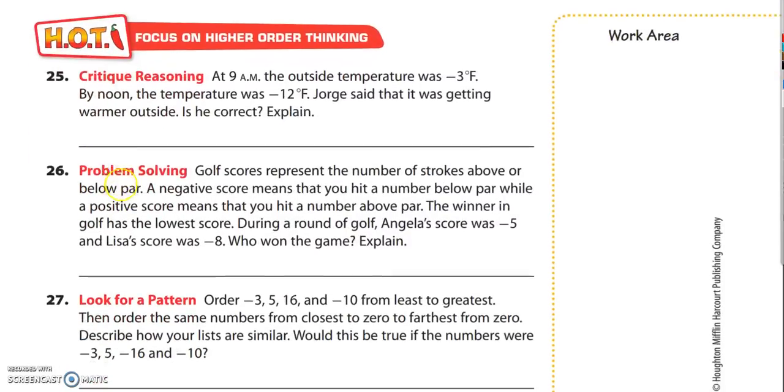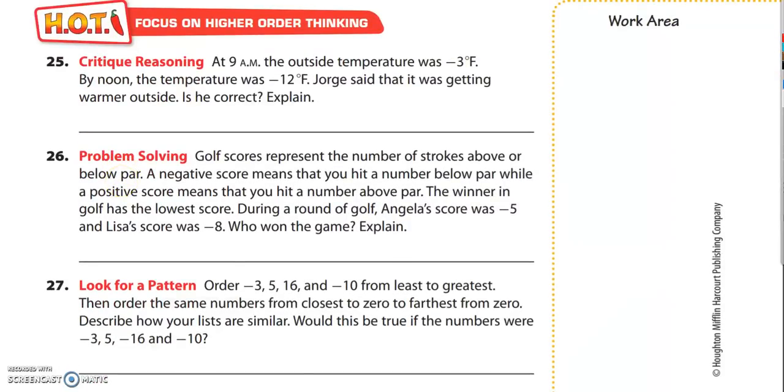Okay, let's go ahead and move on to the HOT questions. The HOT questions are typically the most challenging, but that's okay, we can handle it. 25 reads critique reasoning. At 9 a.m. the outside temperature was negative 3 degrees Fahrenheit. By noon the temperature was negative 12 degrees Fahrenheit. George said it was getting warmer outside. Is he correct?